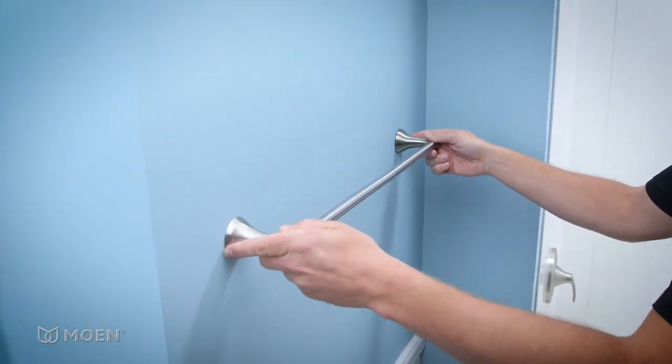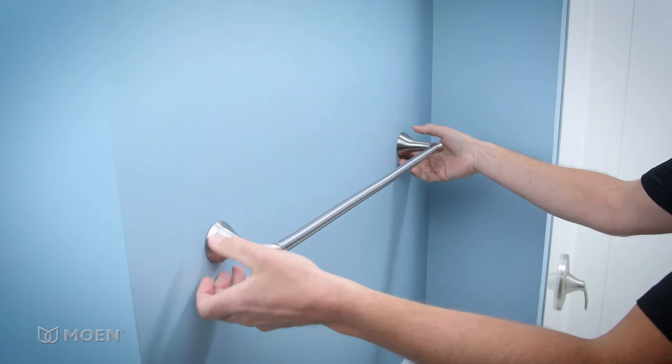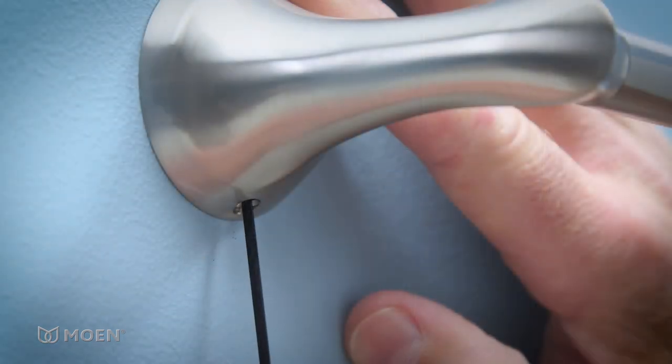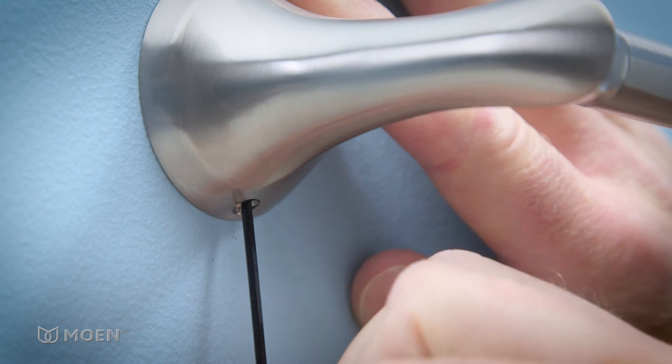Attach the posts onto the mounting brackets, making sure they're flush against the wall. Then tighten each of the set screws to secure the posts in place.